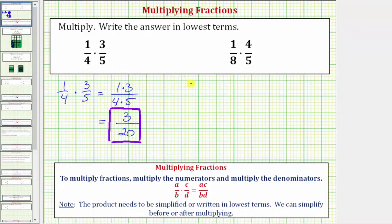Here we have 1/8 times 4/5. So the product would have a numerator of 1 times 4 and a denominator of 8 times 5.